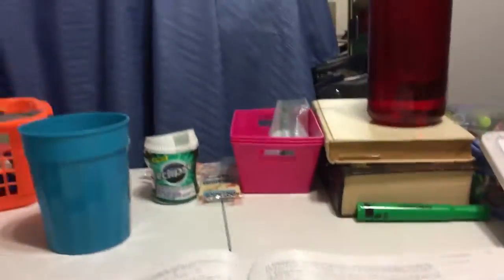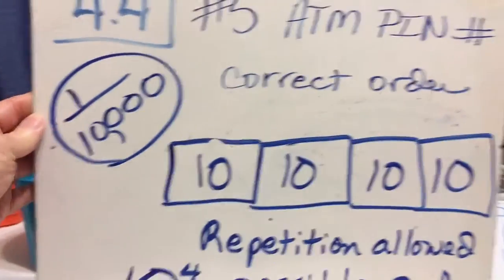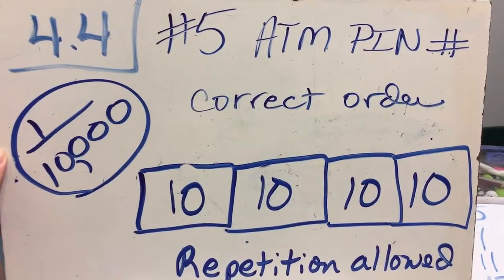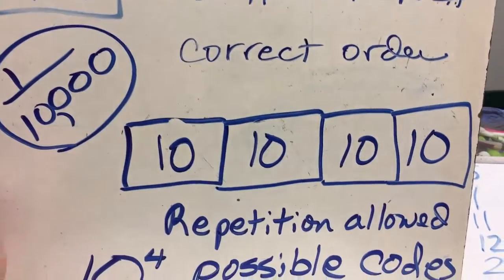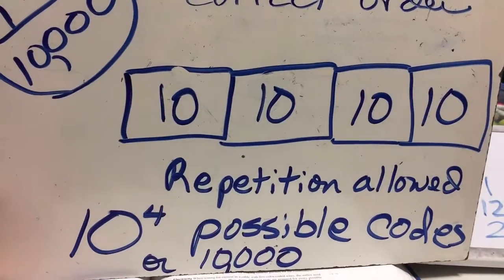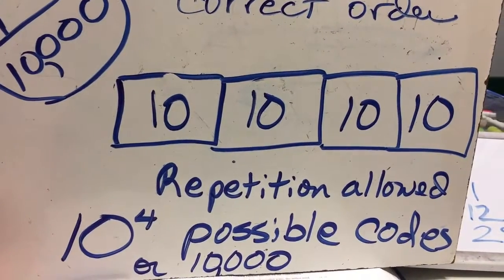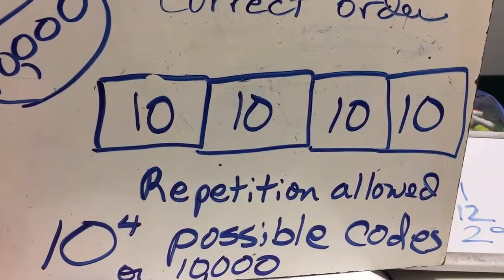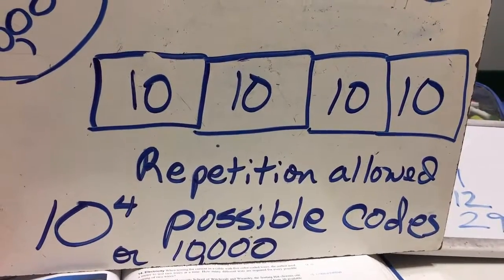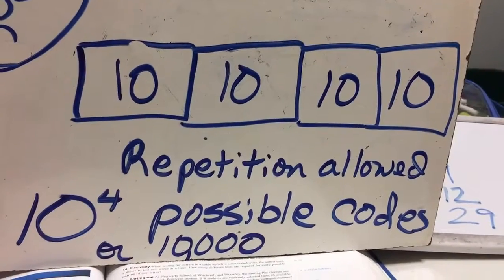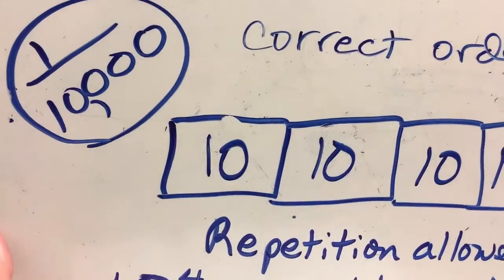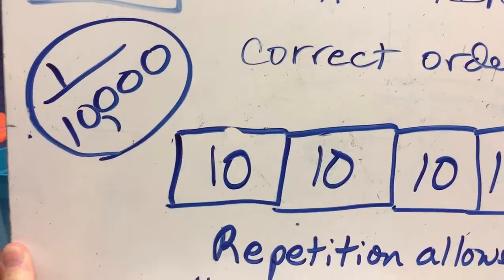We have four slots for the code numbers, zero through nine, so that's ten options each, and repetition is allowed. This one is actually a fundamental counting principle because we're doing with replacement. We're going to have ten ways to have the first digit, ten additional ways to do the second, ten, ten, and so the number of possible codes would be ten to the fourth, or 10,000. Therefore, the probability of getting it correct is one out of 10,000.